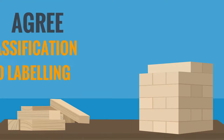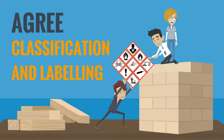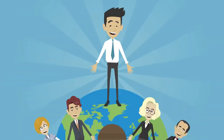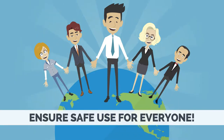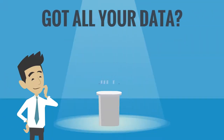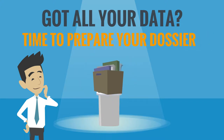Once John and his co-registrants have all the information needed for registration, they need to agree on the classification and labeling of their substance. This ensures that everyone will use it safely. Well, you need to include all that information in your registration dossier — more about that in the next step.